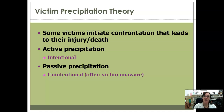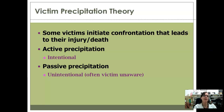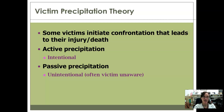Similarly, if somebody gets the girl that somebody else wanted, that's going to provoke that other person. It could also be something like wearing expensive clothing or jewelry that makes somebody really jealous, and that jealousy can prompt a crime — whether it's theft or some kind of violent victimization. Even a child who won't stop crying can be seen as passive precipitation, because it is completely unintentional on the part of the child, but that is what causes the incident to start if it becomes an abusive situation from their caretaker.